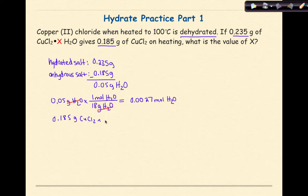So 0.185 grams of CuCl2, again we're going to convert that into moles, so 1 mole of CuCl2. The gram formula mass of that is around 134.45 grams of CuCl2.